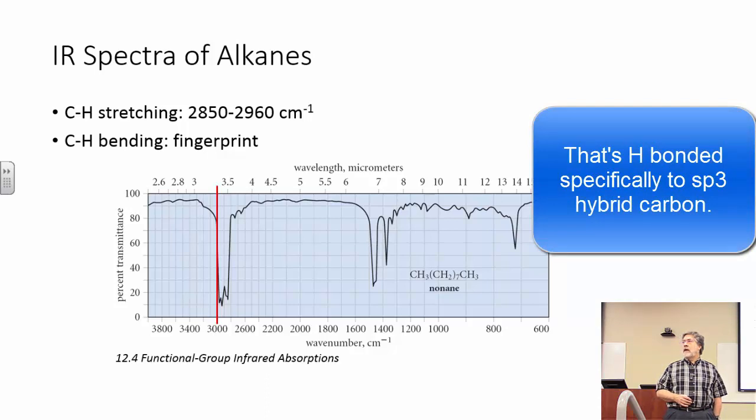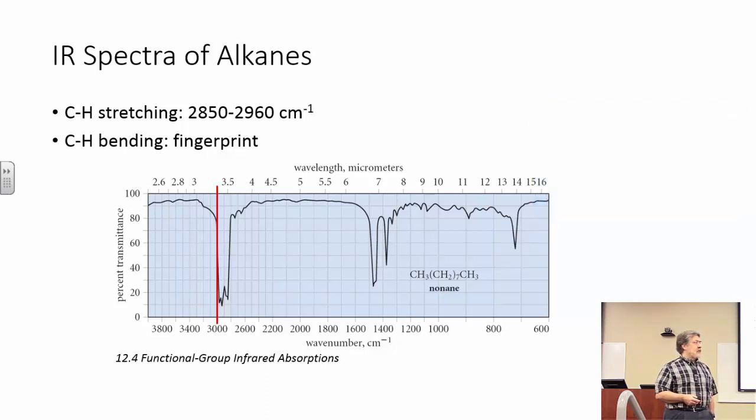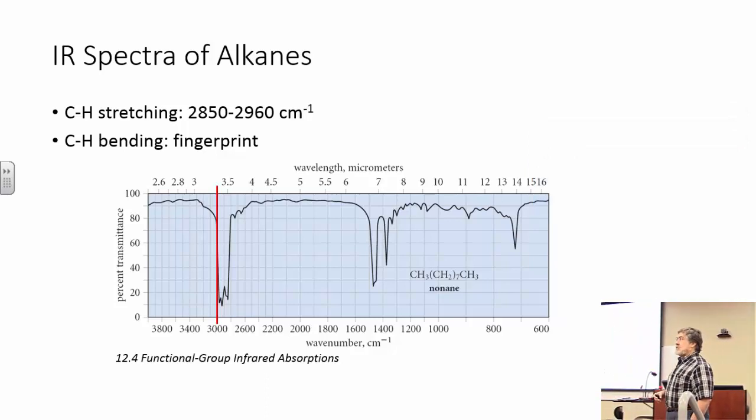And again, most organic compounds that you'll see their spectra will have lots of SP3 carbon hydrogen bonds, so you'll see the 3000 line.